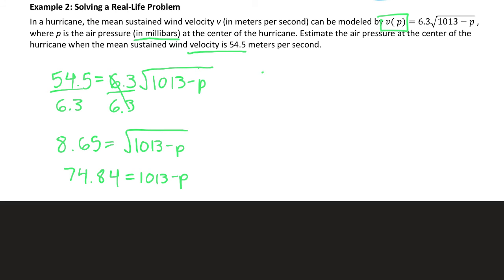So, I'm going to rewrite that so I have room to solve. And then I'm going to solve that equation. Subtract 1013 from both sides. I get negative 938.16 equals negative P. So really, P equals positive 938.16. And that's in what's called millibars.